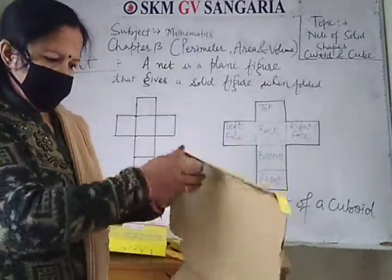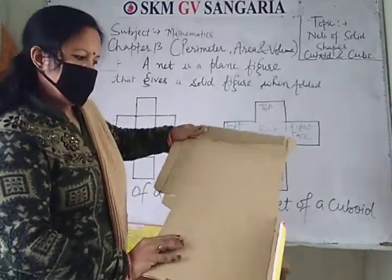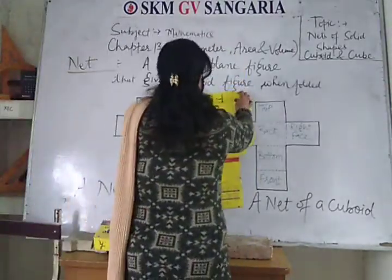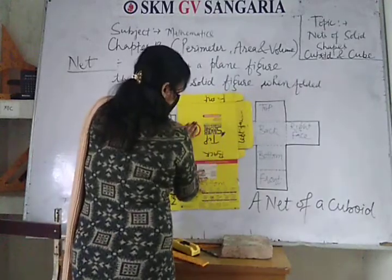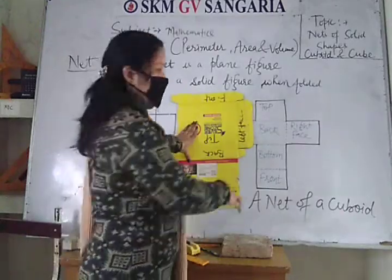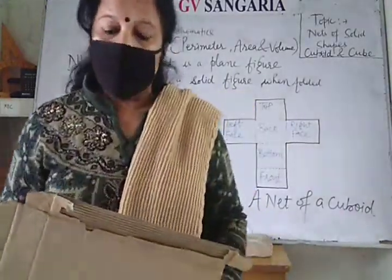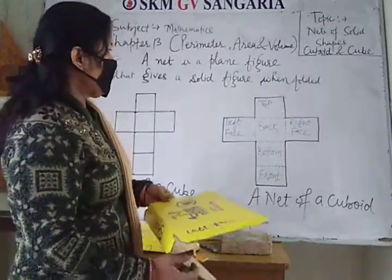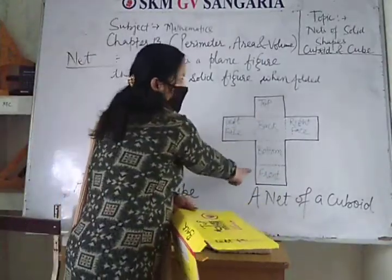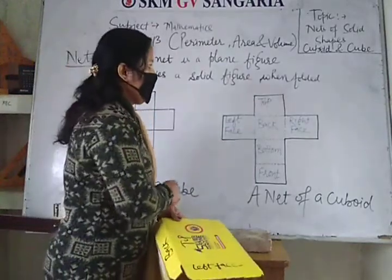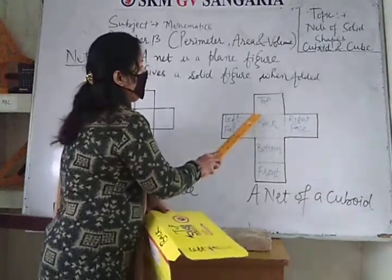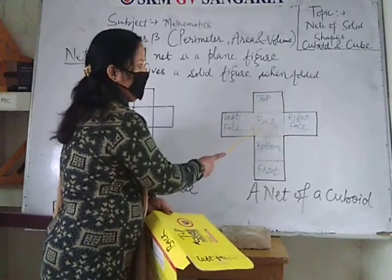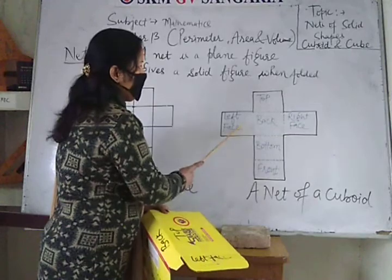When I have unfolded it, the shape is like this. This is the net of a cuboid. I have shown the dotted lines — total 6 faces: 1, 2, 3, 4, 5, and 6. This is top, back, bottom, front, left face, right face. When you fold it along the crease, you will find the shape of the cuboid.